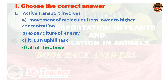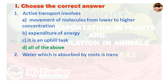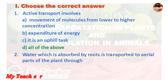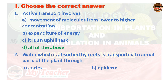Second question: Water which is absorbed by roots is transported to aerial parts of the plant through — A. Cortex, B. Epidermis, C. Phloem, D. Xylem. Answer is D. Xylem.